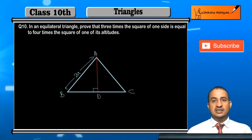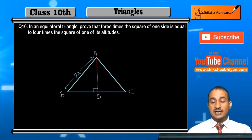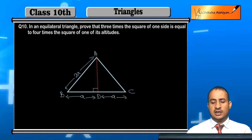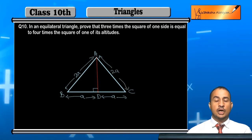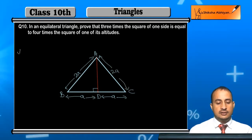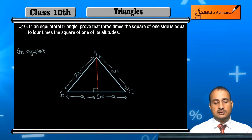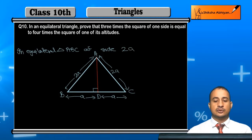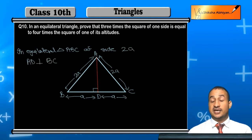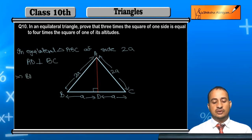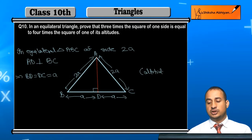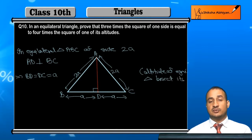AD is perpendicular — this is the perpendicular altitude. Since AD is perpendicular on BC, that is the altitude, therefore BD is equal to DC is equal to A. Why? Because the altitude of an equilateral triangle bisects one of its sides.